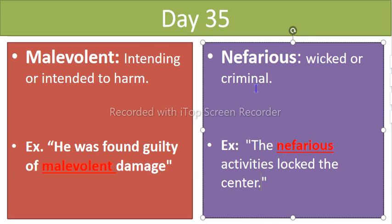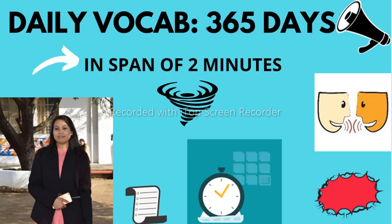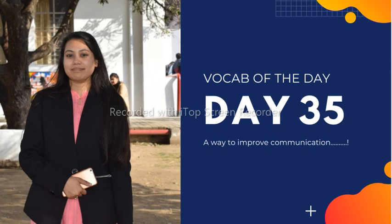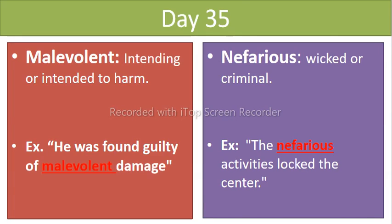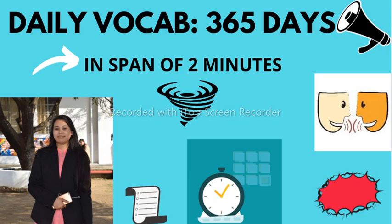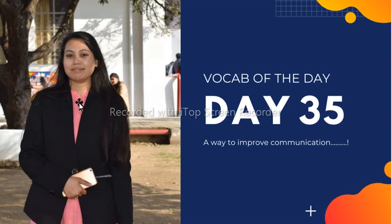So these are the two words for Day 35 — malevolent and nefarious. I hope you understood well. Stay tuned for the other days. Thank you so much for listening.